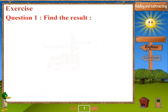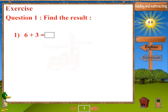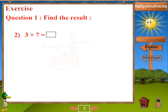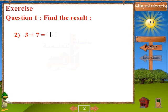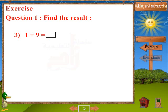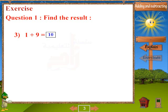Exercise. Question 1: Find the result. 1. 6 plus 3 equals 9. 2. 3 plus 7 equals 10. 3. 1 plus 9 equals 10.